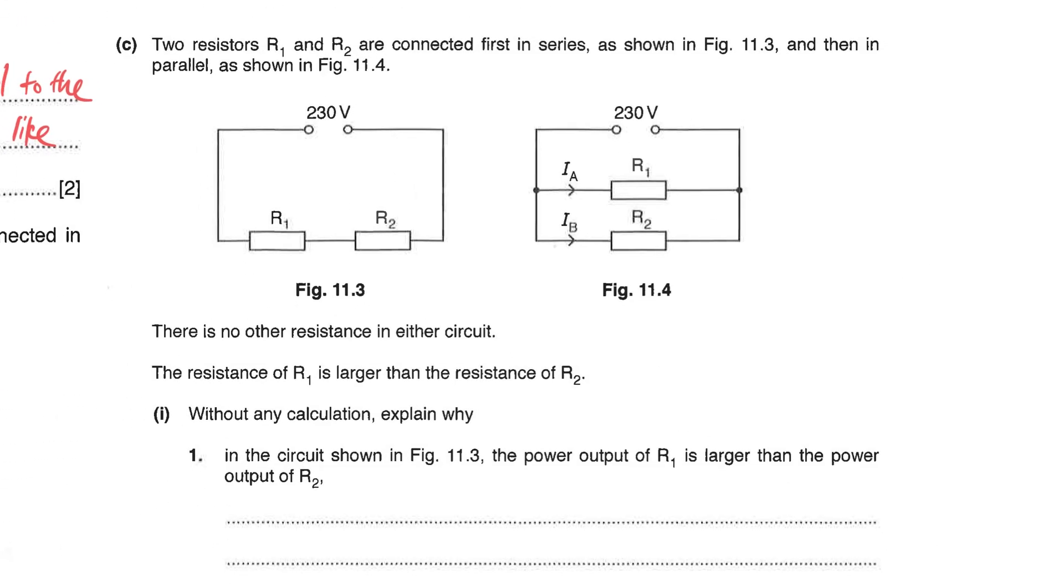Let's go to the next part which is the purpose of the video here. You are given two circuits where R1 and R2 are connected in series versus the same resistor R1 and R2 connected in parallel. You must know the current flowing through this circuit 11.3 will be the same because in the series circuit current is the same, and V1 plus V2 add together is your EMF.